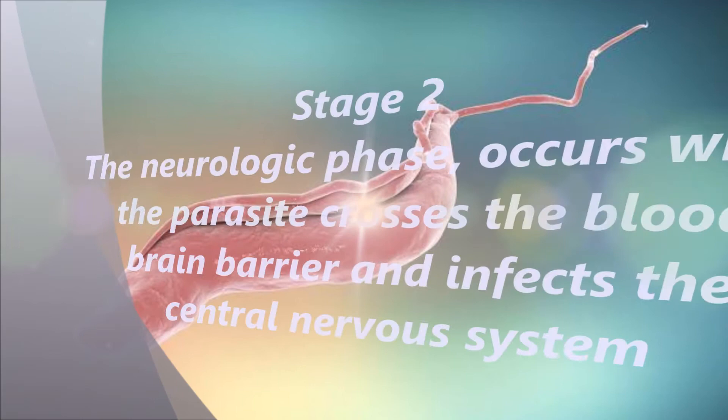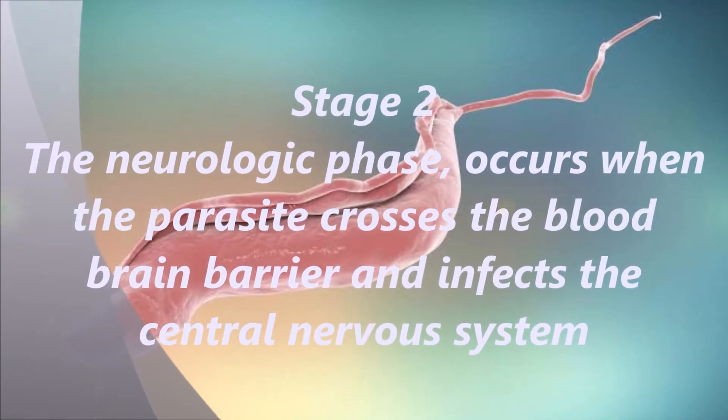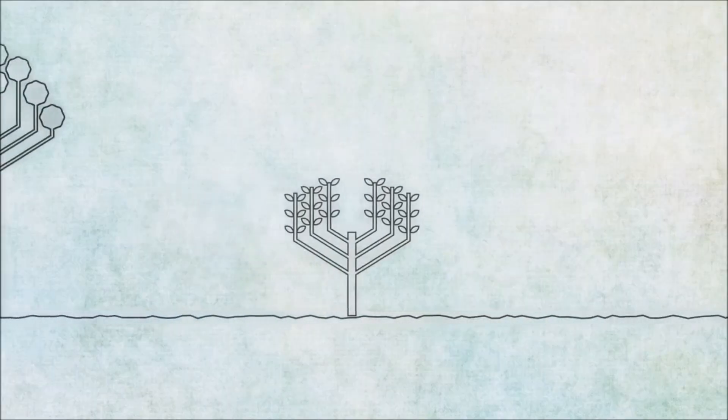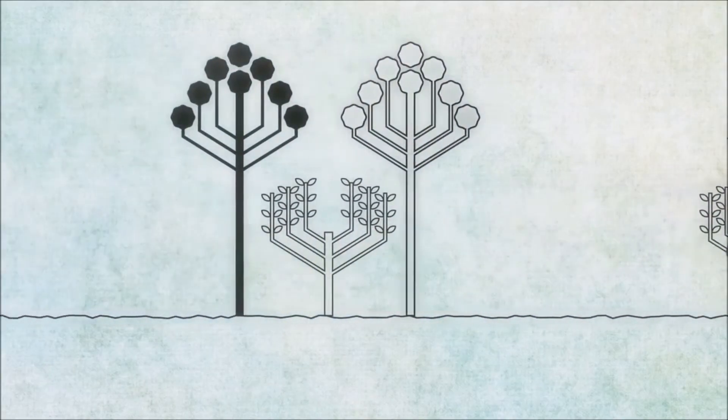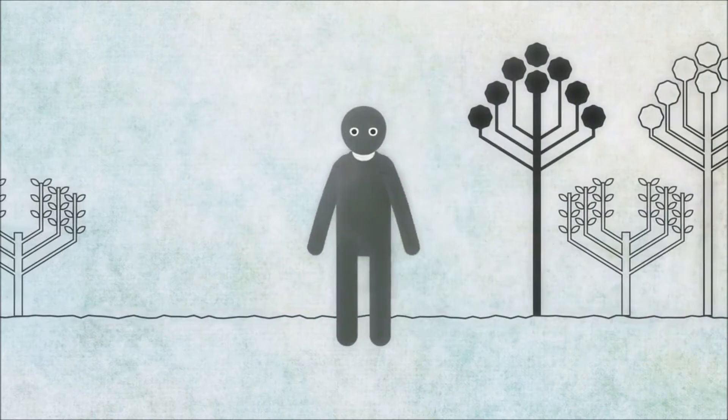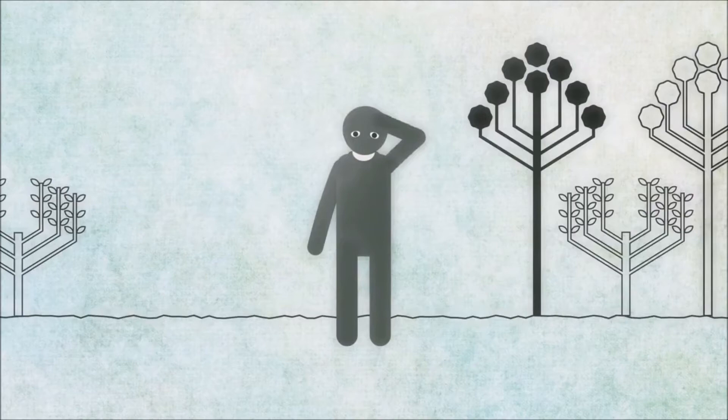In stage two, the neurologic phase occurs when the parasite crosses the blood-brain barrier and infects the central nervous system. These first phase symptoms are sometimes too mild to be detected, but this is when it is actually easiest to treat the disease. If it isn't treated in time, the parasites advance to the brain.